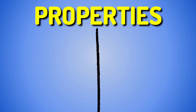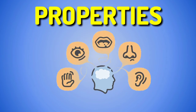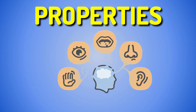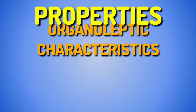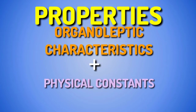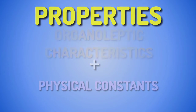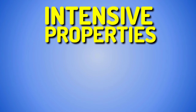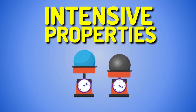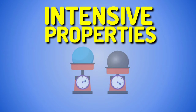Among the properties of substances there are some that can be appreciated through the senses, such as color, flavor, touch sensation, etc., which are called organoleptic characters. Organoleptic characters and physical constants are called intensive or specific properties. These properties do not depend on the mass available, since for the same substance they are the same, both in a small portion and in a larger quantity.